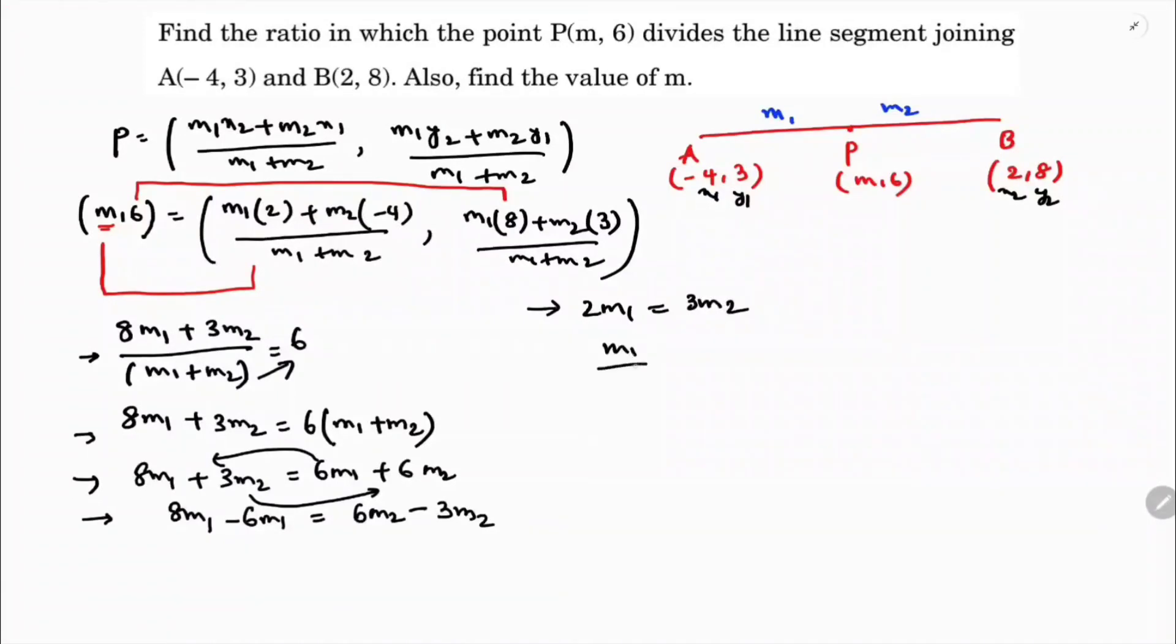So M1/M2 is 3/2, so M1:M2 is 3:2. So this is the ratio, M1:M2 is 3:2. Now we need to find the value of m.